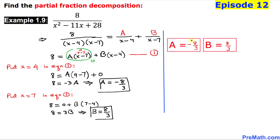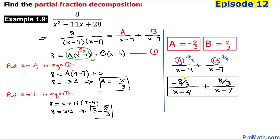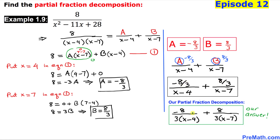So our A value turns out to be negative 8 over 3 and our B value is 8 over 3. In our partial fraction decomposition, we replace A with negative 8 over 3 and B with 8 over 3. Here is our final answer. Thanks for watching and please don't forget to subscribe to my channel for more exciting videos.